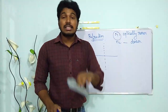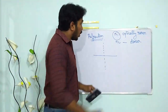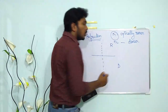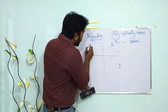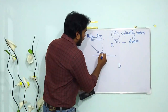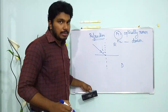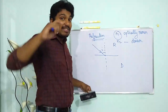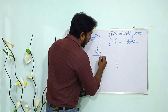How does this bending take place? Suppose light is moving from a rarer to a denser medium. If the angle of incidence is i, then the refracted ray will bend towards the normal.